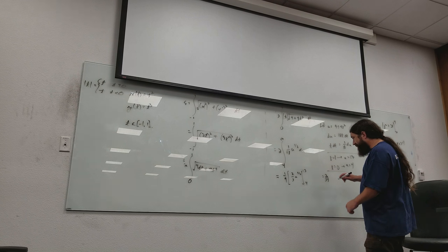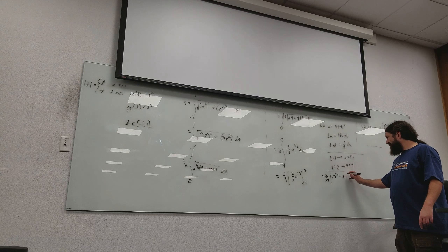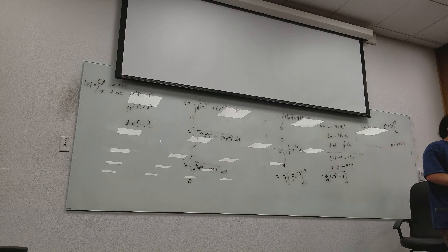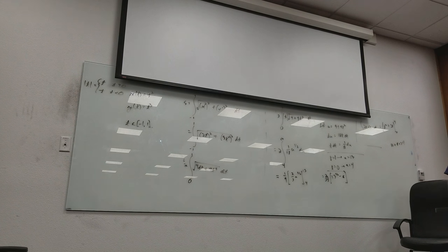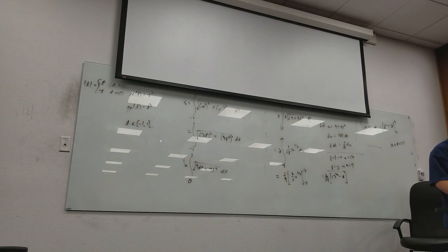We've got 2 over 27 times 13 to the 3/2 minus 4 to the 3/2, which I think is 8. So, here's an answer. It should be a relatively small number because these curves don't look very big. 13 to the 1.5 minus 8 — that's a 27 — yeah, it's like 2.8 something. That sounds about right, so it's not very big. And if I do 2 times the square root of 2, that's pretty close to it.